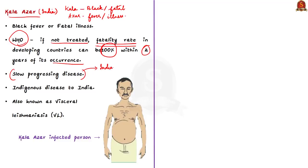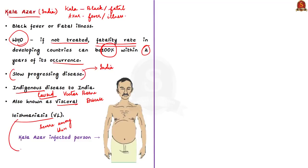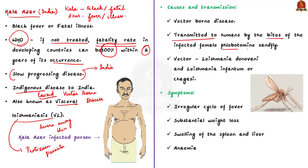Kala Azar is a vector-borne disease also known as visceral leishmaniasis, as it is one of the forms of leishmaniasis and the most severe among them. Leishmaniasis refers to a group of diseases caused by protozoan parasites from more than 20 Leishmania species. These parasites are transmitted to humans by the bites of infected female phlebotomine sandflies. Among the various forms, visceral leishmaniasis is usually caused by the species Leishmania donovani and Leishmania infantum or Leishmania chagasi.